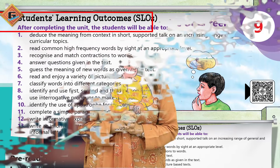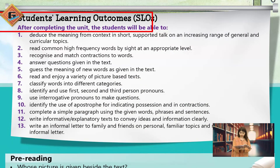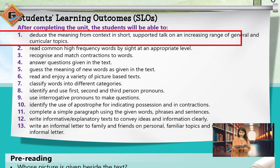So first, let's see the learning outcomes. Students' Learning Outcomes: After completing the unit, the students will be able to deduce the meaning from the context in short supported talk, covering an increasing range of general and circular topics.